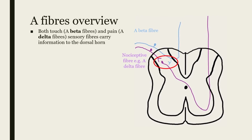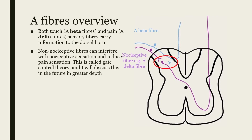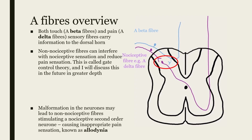Non-nociceptive fibers, like A-beta fibers, can interfere with nociceptive sensation and reduce pain sensation. This is called gate control theory, which will be discussed in greater depth later. Malformation of touch neurons within the dorsal horn may lead to non-nociceptive fibers accidentally stimulating a nociceptive second-order neuron, causing an inappropriate pain sensation from a non-noxious stimulus. This is known as allodynia.